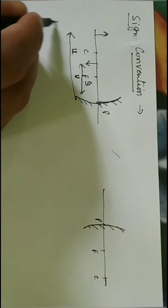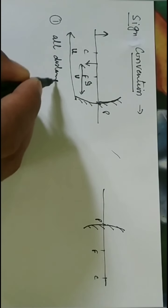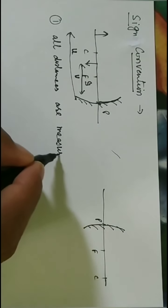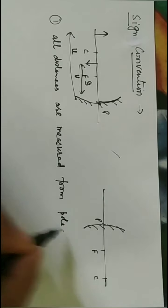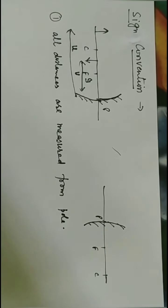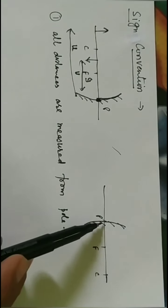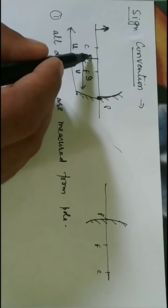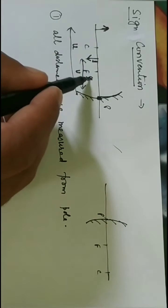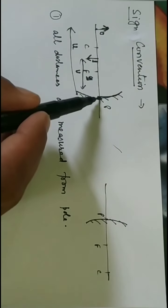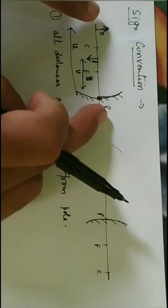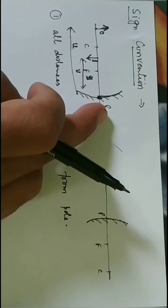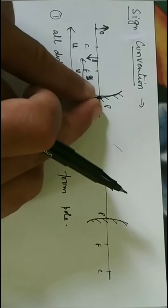The first rule is: all distances are measured from the pole. Whenever we measure a distance, our starting point will be P, the pole. Here, this is our object. We know that when the object is far from C, the image is between C and the focus. The distance of the object is measured from the pole — we start from P to the object. So P to O is your object distance.